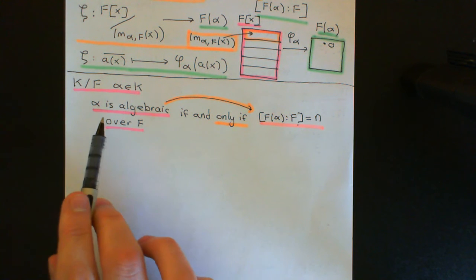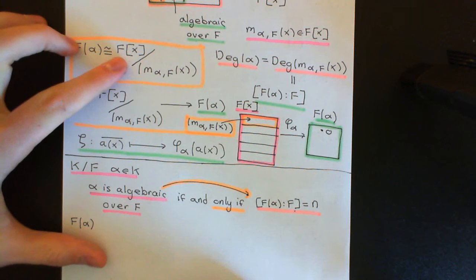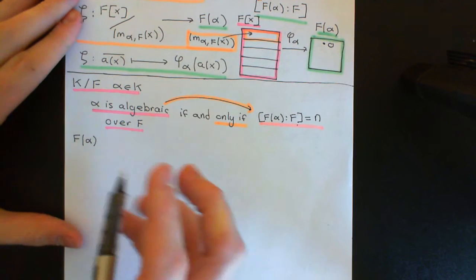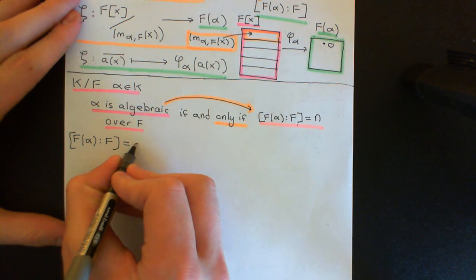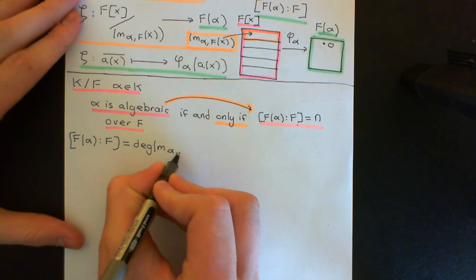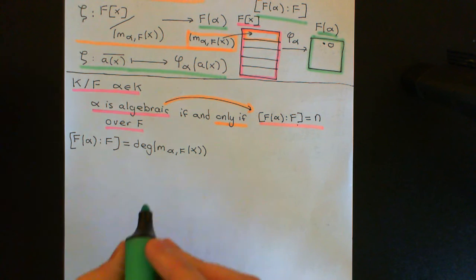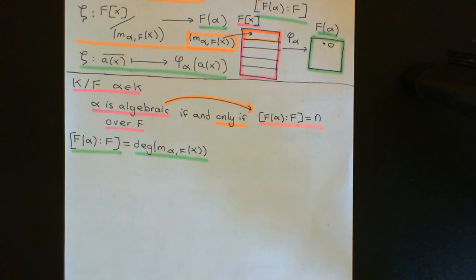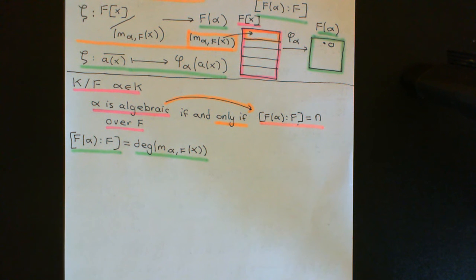It's through what we've just proven. We know that if alpha is algebraic over F, then the field generated by alpha over F is going to be isomorphic to the quotient ring structure, and we know that the degree of that field extension over F is just going to be the degree of the minimal polynomial for alpha over F. Therefore the degree of F(alpha) over F equals the degree of the minimal polynomial for alpha over F.